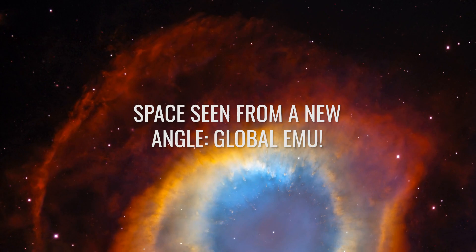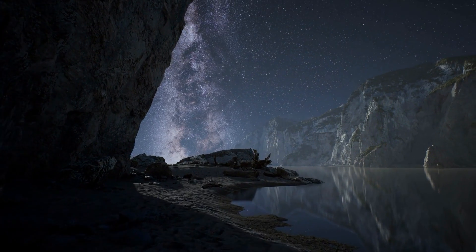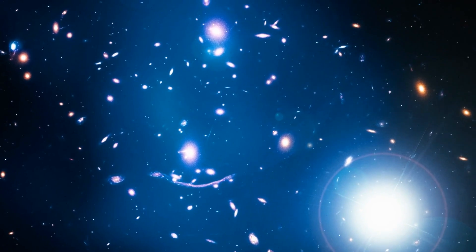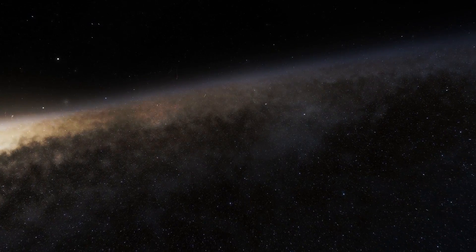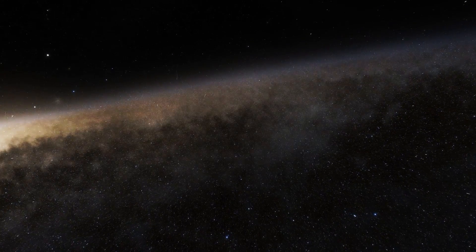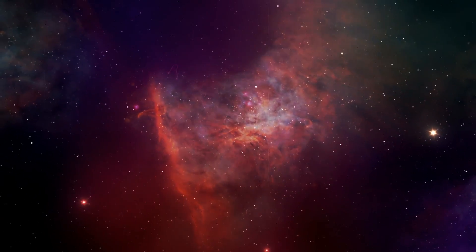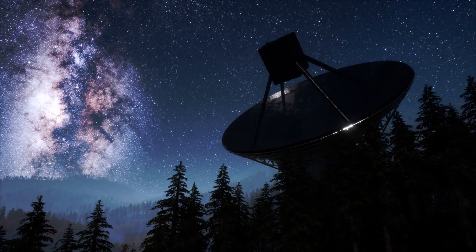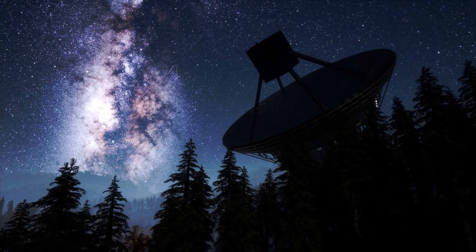Space Seen from a New Angle: Global EMU. Over 300 scientists from 21 different countries have joined forces in a gigantic project to map the entire southern sky. The Global EMU project stands for Evolutionary Map of the Universe. What is observed here is not light but radiation of all kinds: radio signals, ultraviolet rays, x-rays and the general cosmic noise. The world's most advanced radio telescopes work together to decode every little beep and noise in the universe.